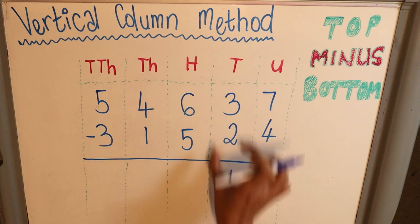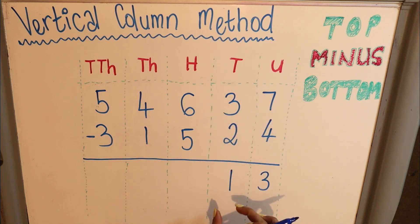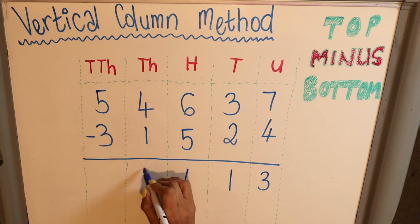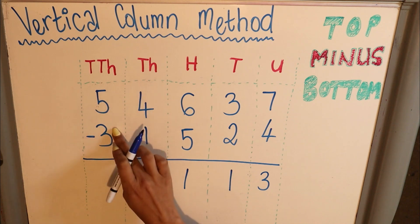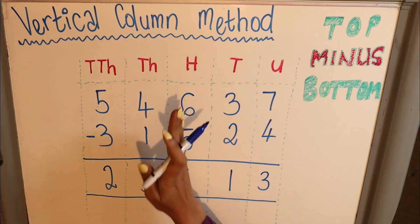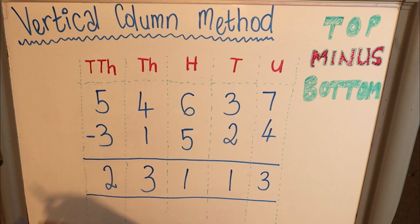6 minus 5 is 1. 4 minus 1 is 3, and 5 minus 3 is 2. Draw a line to indicate this is your final answer. Again, just look very carefully. Each number is written in its columns neatly. Do not write your numbers skewed. It will make things very complicated for you when it comes to examples where you need to borrow.